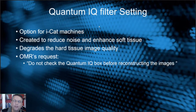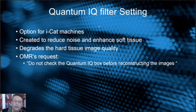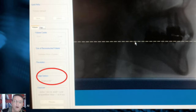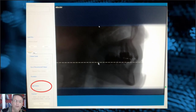On the iCat machine specifically, make sure that your Quantum IQ filter is turned off. The Quantum IQ filter from iCat was created to reduce noise and enhance soft tissue — it was made by engineers. The problem is they didn't ask the radiologists whether this was an enhancement. It really degrades the hard tissue image quality. At the OMR's request, do not check the Quantum IQ box before reconstructing the images. For those of you with the iCat, you'll see in this window the image option for Quantum IQ.